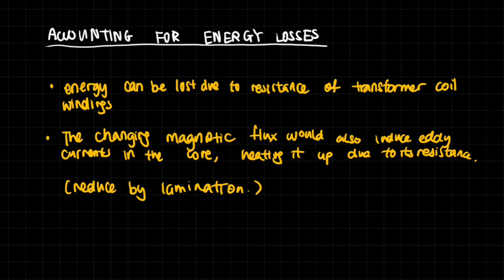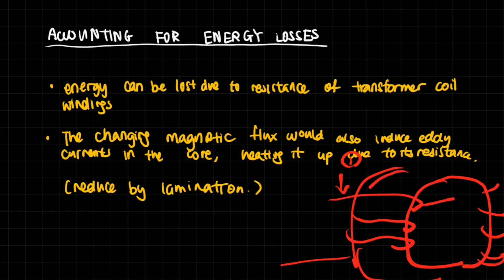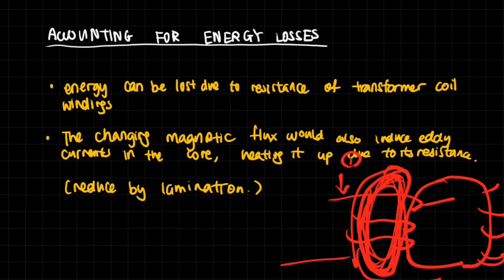Energy can also be lost in transformers. First, there is resistance within the coil windings themselves. Second, the changing magnetic flux induces eddy currents within the iron core — the core is also a conductor — and these circular currents grow larger and larger. A high current means a high amount of heating, so you can lose significant energy due to heat dissipation.